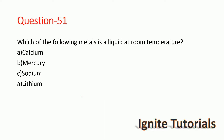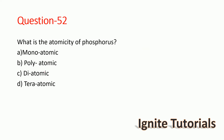In the previous lecture we covered questions 1 to 50 in the General Science topic. Now we will discuss questions 51 to 100. Question 51: Which of the following metals is liquid at room temperature? The correct answer is mercury — mercury is a liquid at room temperature.